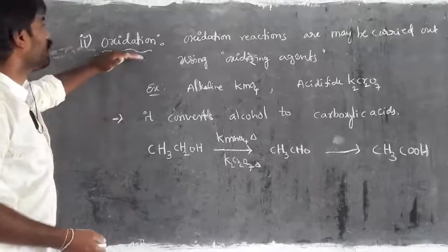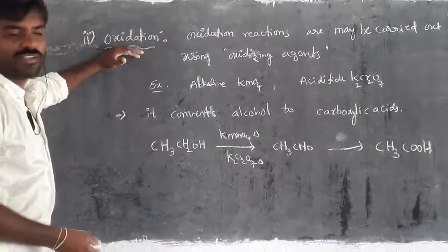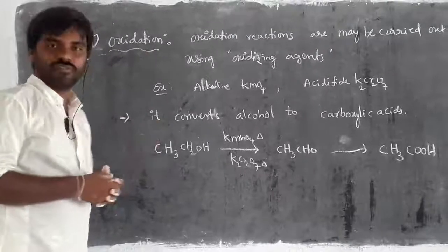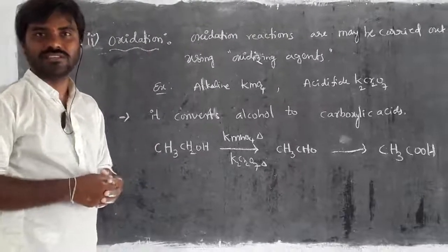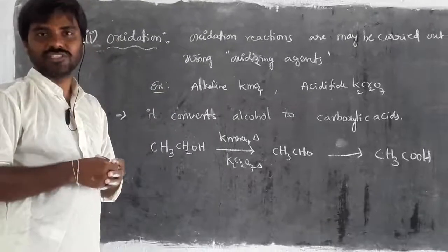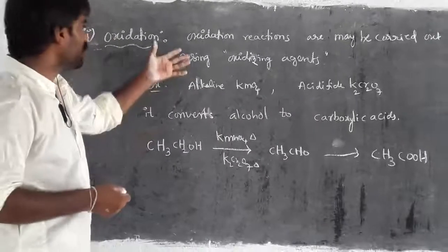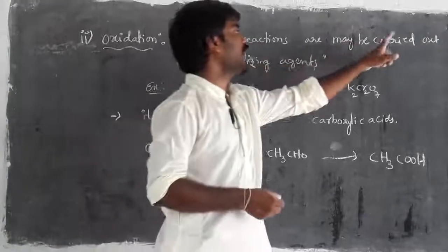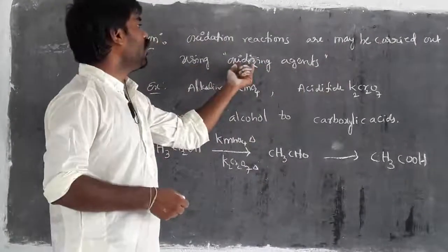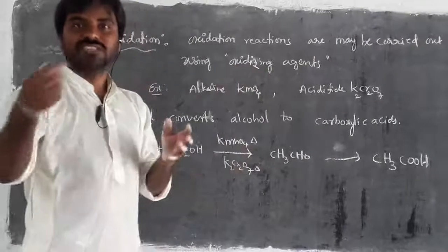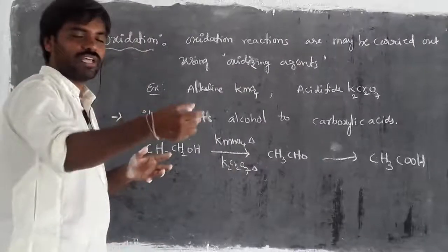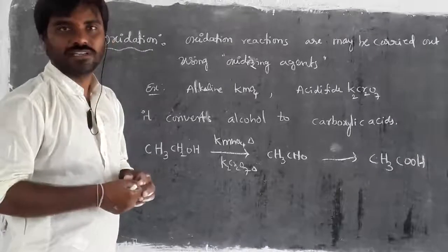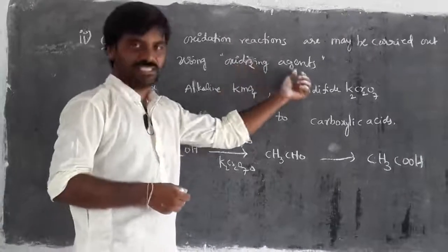The next type of chemical reaction is oxidation. The name itself gives clarity — what is oxidation? Just the adding of oxygen in a reaction is called oxidation. Oxidation reactions may be carried out using oxidizing agents. Oxygen is a liquid; for that we are able to take some compounds. Whatever compounds give oxygen, those are called oxidizing agents.